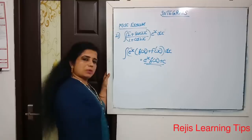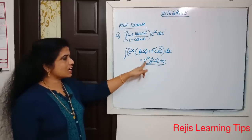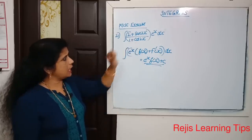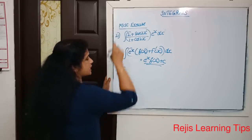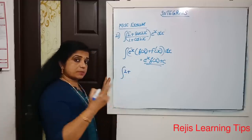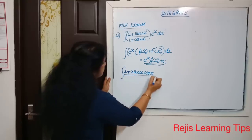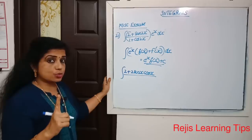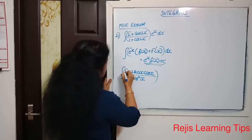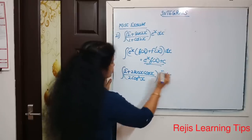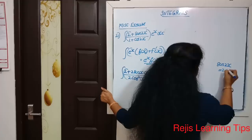We will apply this formula where f(x) is the antiderivative of f'(x). So we write the integral of e raised to x times (2 + sin2x) — and sin2x means 2sinx·cosx — divided by (1 + cos2x), times e raised to x dx.